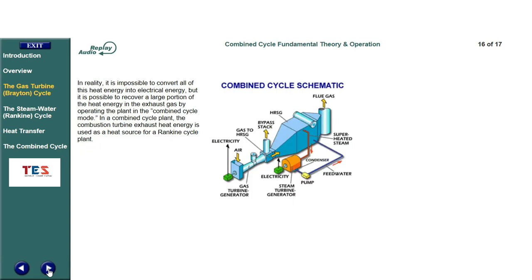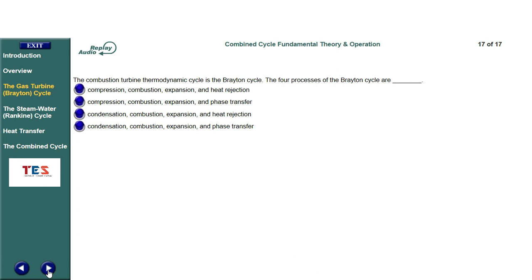In reality, it is impossible to convert all of this heat energy into electrical energy, but it is possible to recover a large portion of the heat energy in the exhaust gas by operating the plant in the combined cycle mode. In a combined cycle plant, the combustion turbine exhaust heat energy is used as a heat source for a Rankine cycle plant. The combustion turbine thermodynamic cycle is the Brayton cycle.